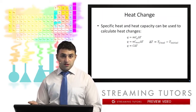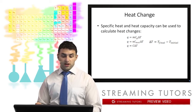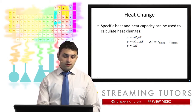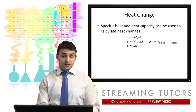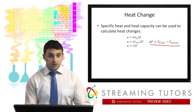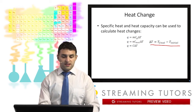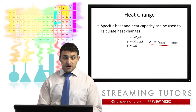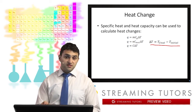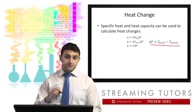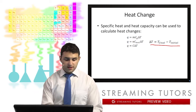We can also use specific heat to calculate heat change. The formula is Q equals mass times specific heat capacity times the change in temperature, or the number of moles times the molar heat capacity times the change in temperature, or if you have heat capacity, it's just heat capacity times the change in temperature. We'll see some examples of that as we look into calorimetry.